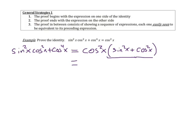We end up with cosine squared x times the quantity in parentheses, and we notice that expression inside is sine squared plus cosine squared, which equals one by the Pythagorean identity. So we have cosine squared of x times one, which is cosine squared of x. We have reached the end of our proof — the left side from above becomes the right side.